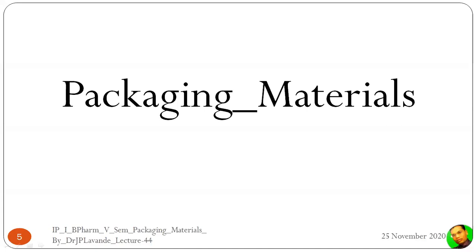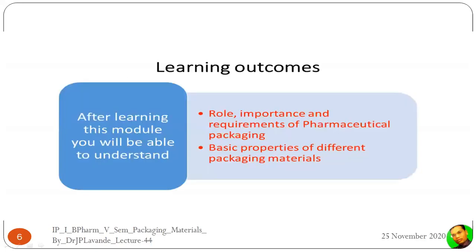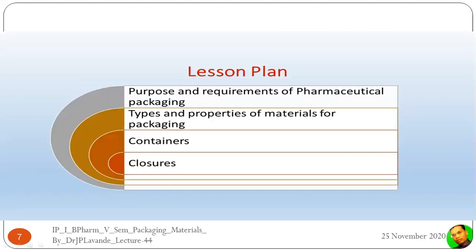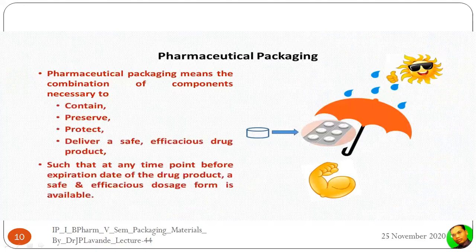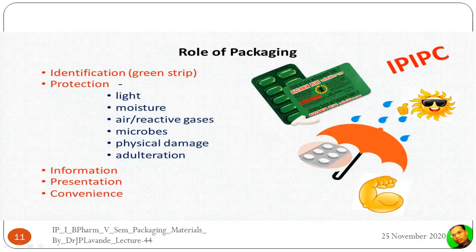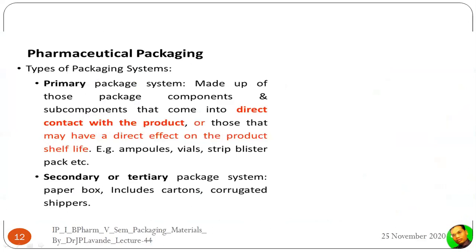In yesterday's lecture, we started the packaging materials. We covered the role, importance, and requirements of pharmaceutical packaging, basic properties of different packaging materials, and went through purpose, requirements, types of packaging systems, and the different types of containers and closure systems. We covered the definition of pharmaceutical packaging, its roles and purposes, which can be summarized as IPC: identification, protection, information, presentation, and convenience.